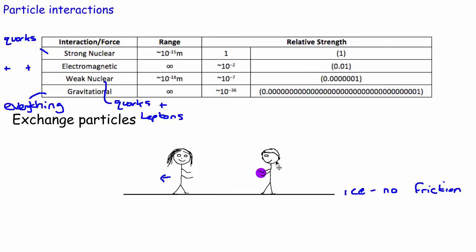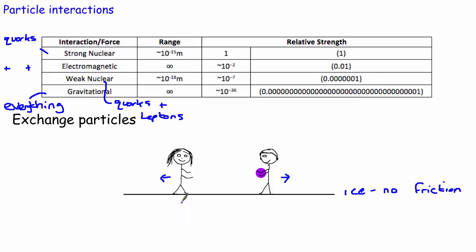He then catches the ball, and in order to conserve momentum, he starts to move away from her — in the same direction the ball was travelling. So by exchanging this ball, she moves one way and he moves the other way: they've repelled each other. This is a model of repulsion. We could replace the two people with two positive charges — one positive charge emits a particle, and in order to conserve momentum it recoils; when the other positive charge absorbs the particle, it moves away too. So by exchanging a particle, we have our model of repulsion.